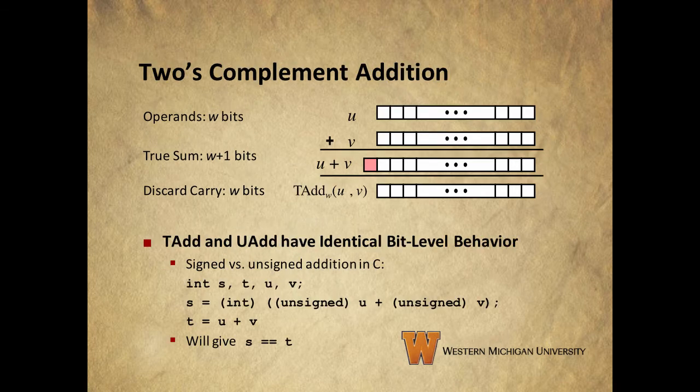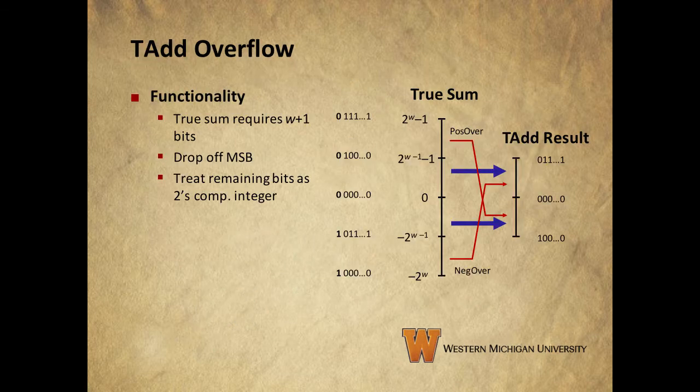Two's complement addition has the same bit level behavior as unsigned addition. So, at the bit level, two's complement addition is quite simple. Just perform the addition, drop the carry bit, and treat the result as a normal two's complement signed integer.